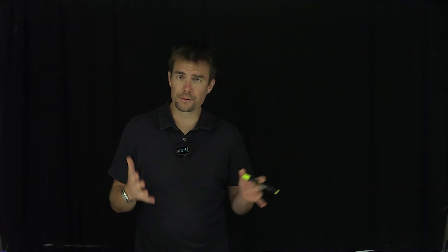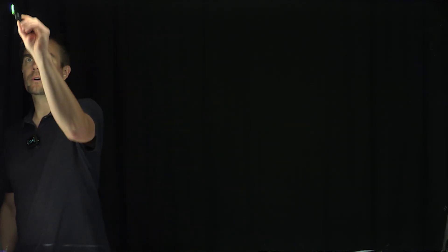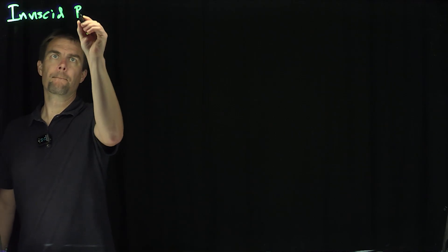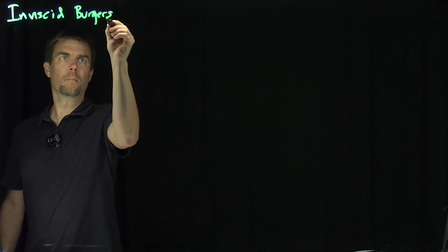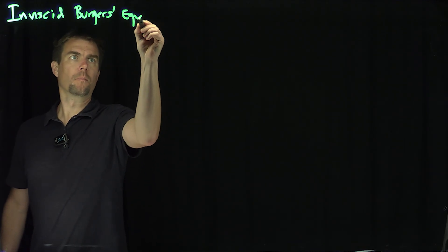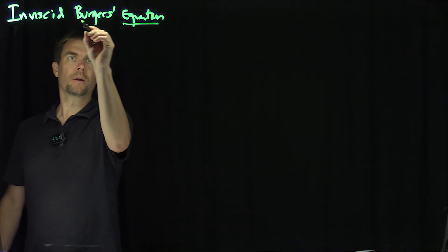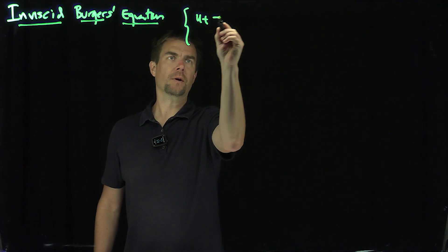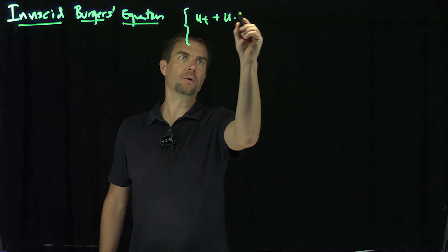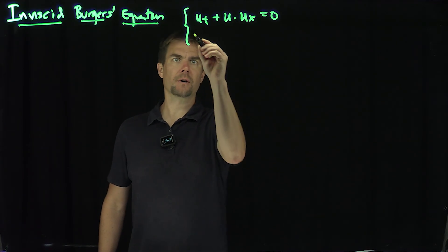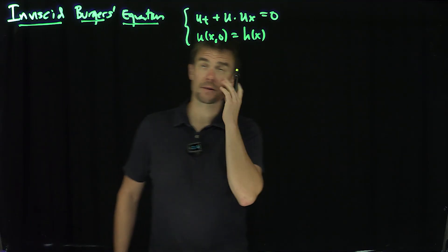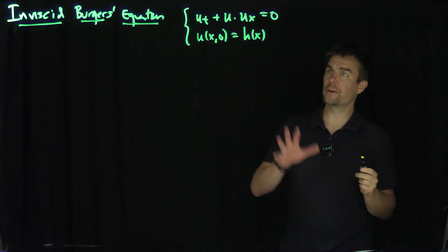Hello students. In this video we'll introduce the Inviscid Burgers equation. The Burgers equation looks like ut plus u·ux equals zero, with some initial data h of x. That's the Inviscid Burgers equation with that initial data.